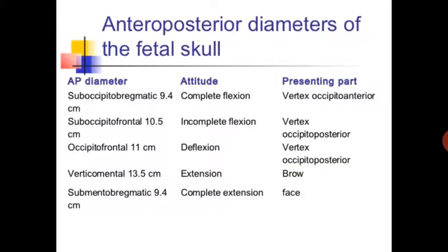The anterior-posterior diameter of the fetal head varies with attitude. The sub-occipito-bregmatic diameter is 9.4 cm, which corresponds to complete flexion, and the presenting part in this attitude is the vertex in occipito-anterior position.